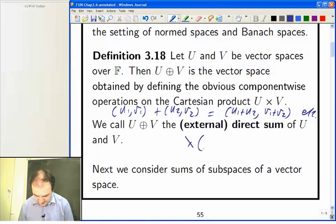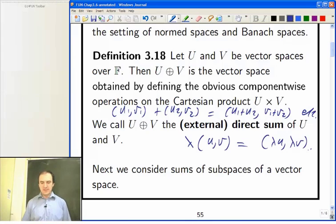So lambda times U V is equal to lambda U lambda V. So you can now see this is where, remember we're working on U cross V and so you're talking about pairs of vectors one from each space and you add them by adding up the coordinates.